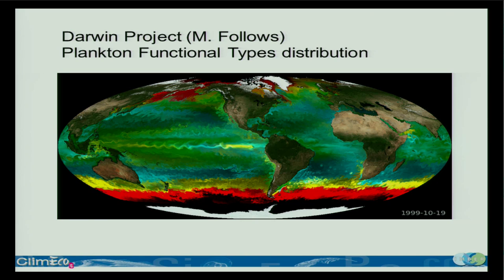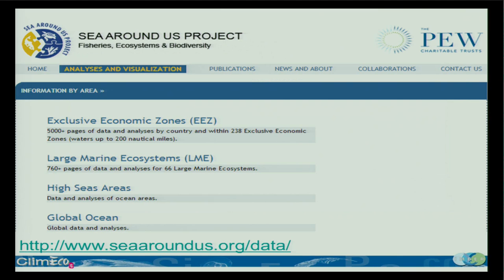It was interesting to see that we targeted stations where high biodiversity was predicted at about 200 meters depth, and we indeed found a deep chlorophyll maximum at 200 meters sitting on top of the oxygen minimum zone. So it was quite impressive to find that.